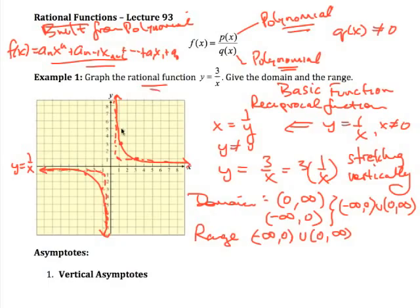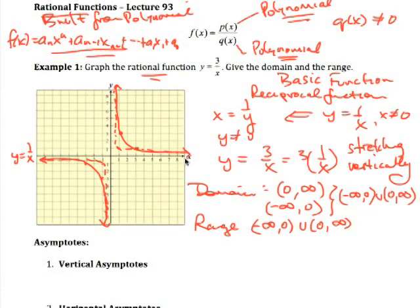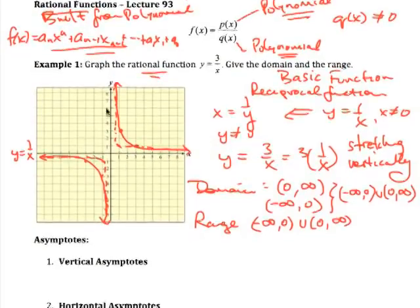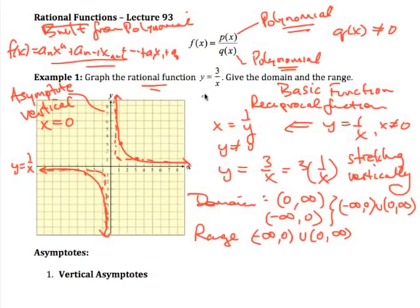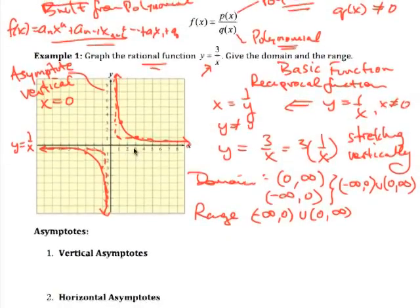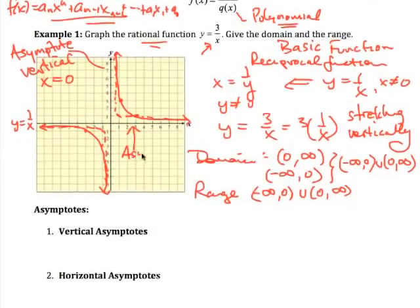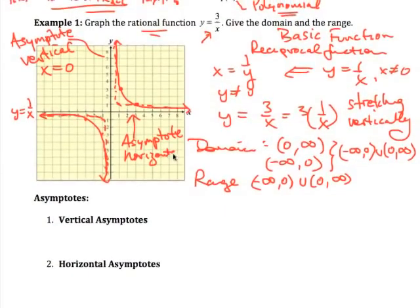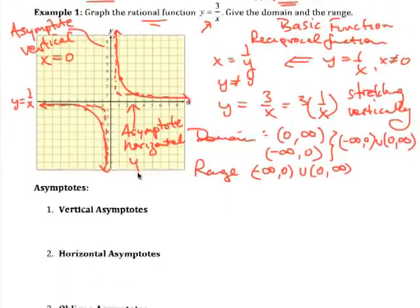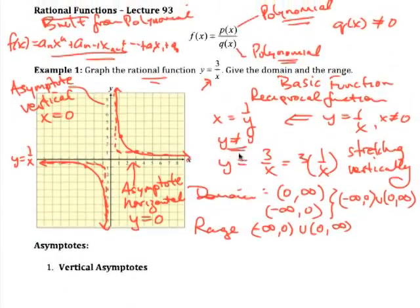That's a simple rational function. Two key features: the y-axis, where x = 0, is a vertical asymptote — a wall the graph can't cross — with equation x = 0. The x-axis is a horizontal asymptote with equation y = 0, since y cannot be zero.